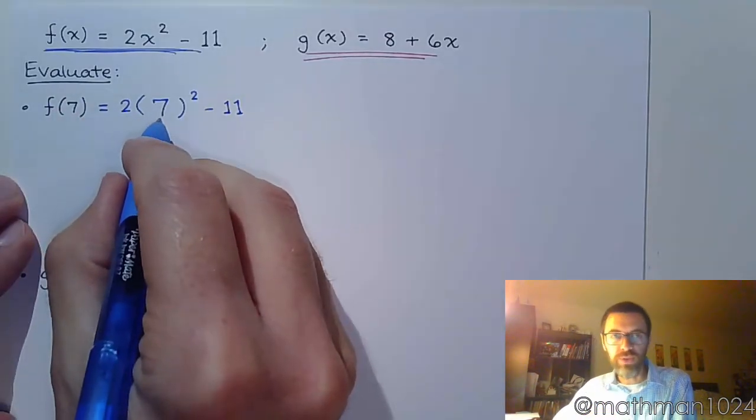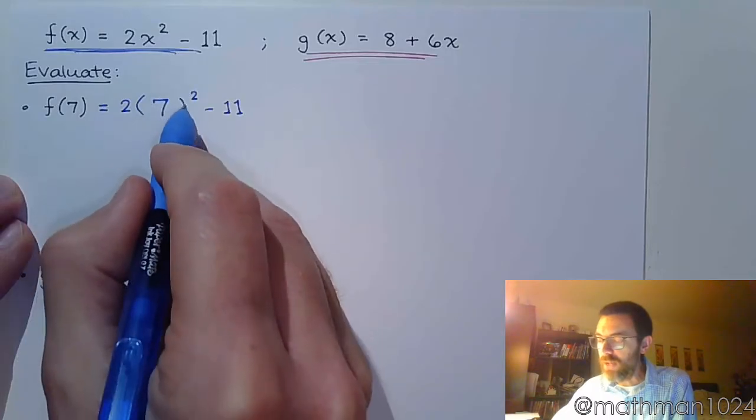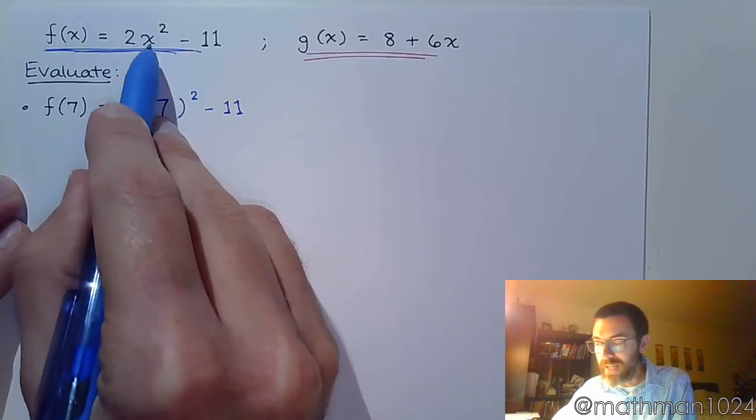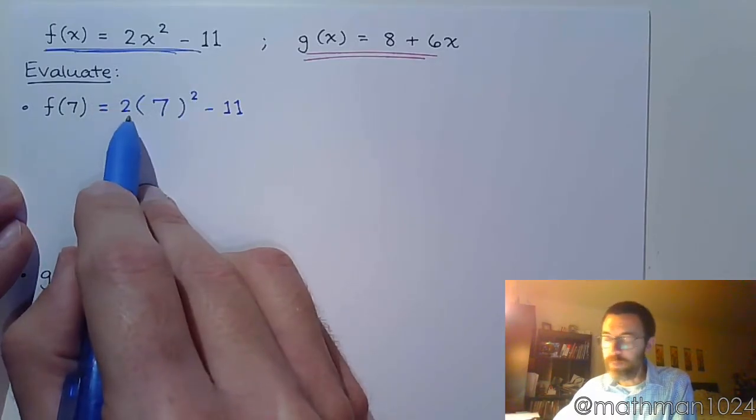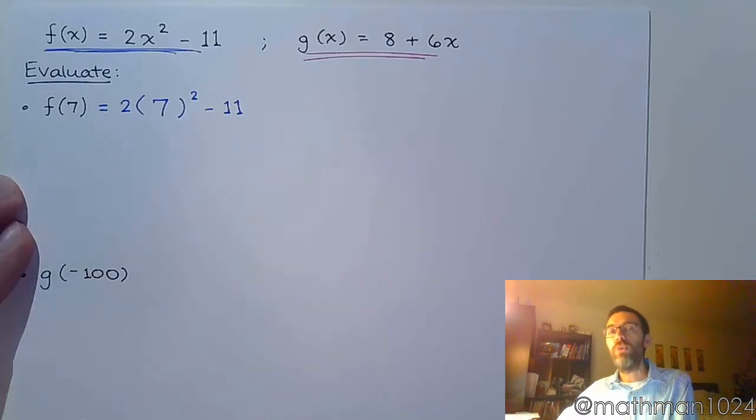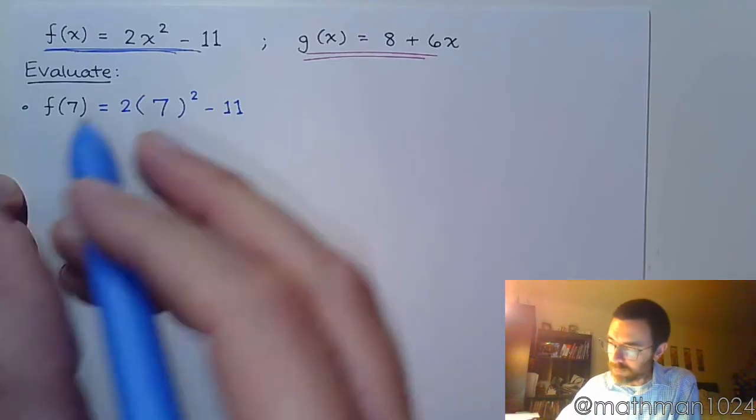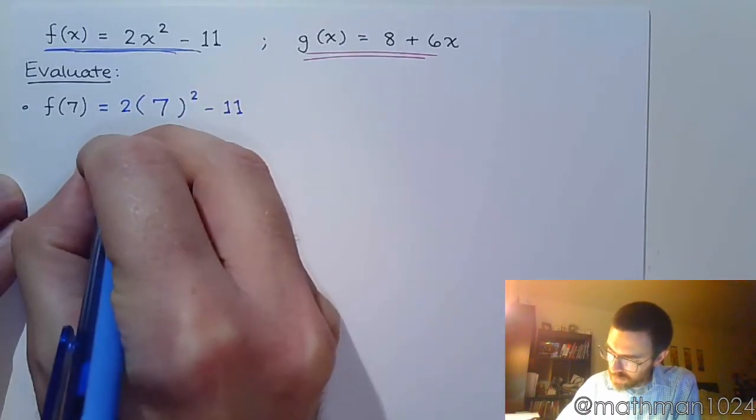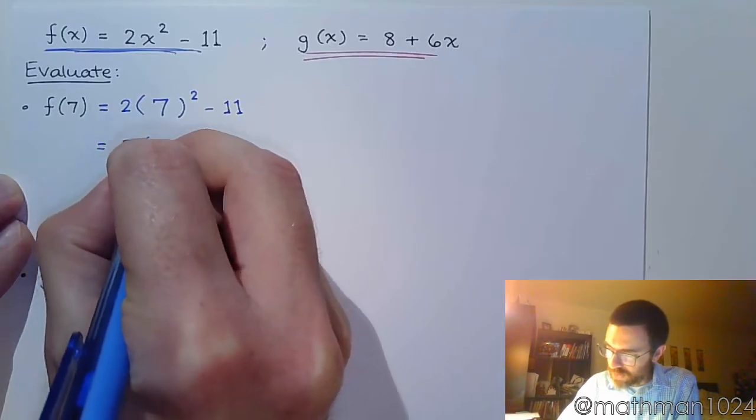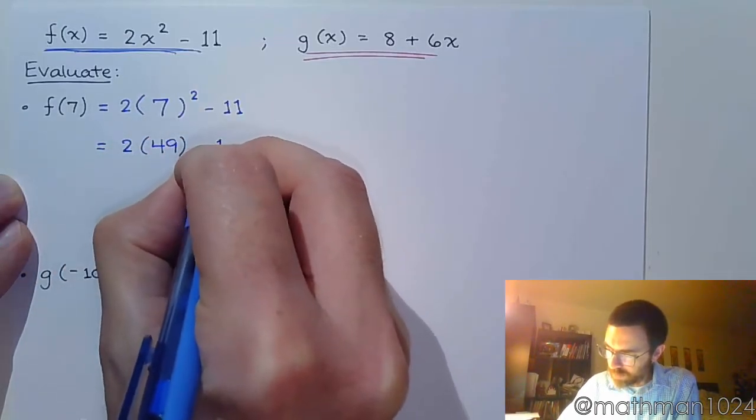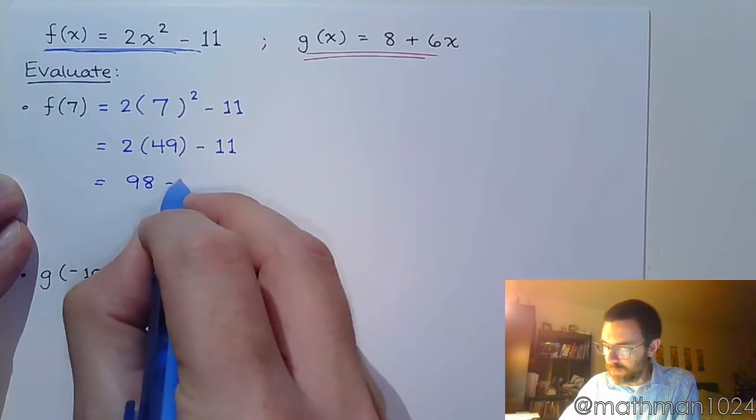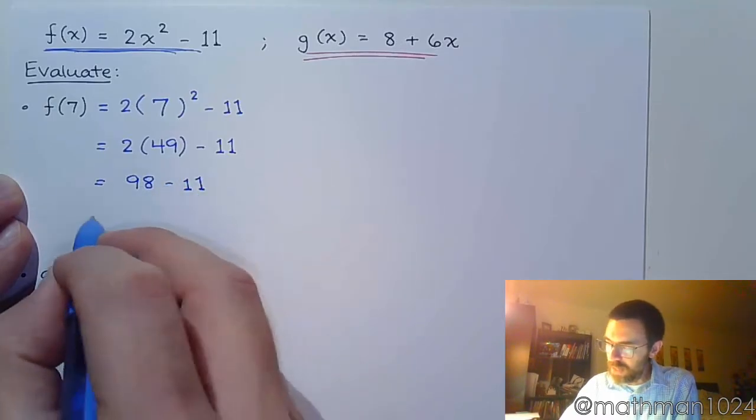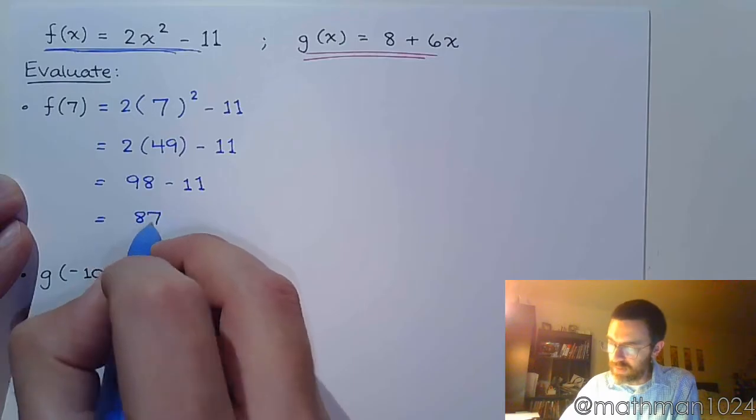And this is where a lot of students tend to struggle because they don't know the order of operations. So, parentheses, but there's nothing to do here. Then you go to powers. You need to understand that the square was only connected and only affecting the x. So this square is only going to affect the 7, not the 2. If you try to multiply 2 times 7 first, you're breaking the order of operations and the order of operations is going to break you. So we have to do the 7 squared first, so that's 49. And now we multiply. 2 times 49 is 98.